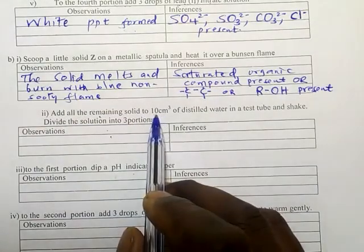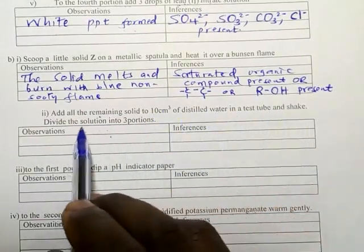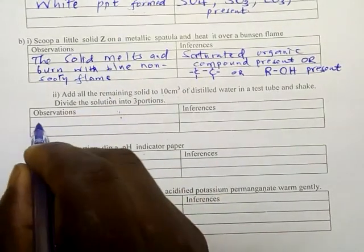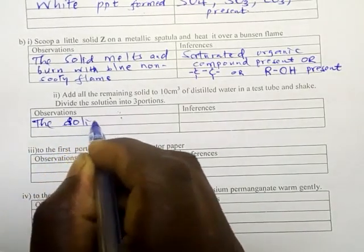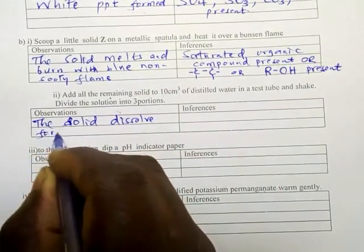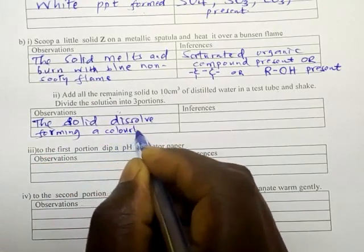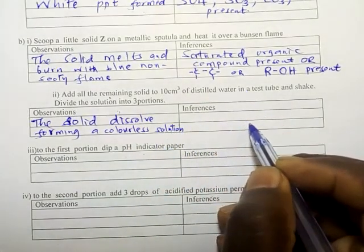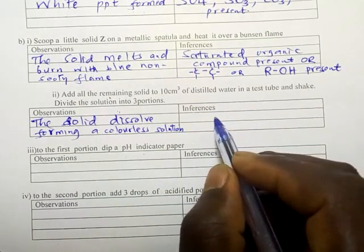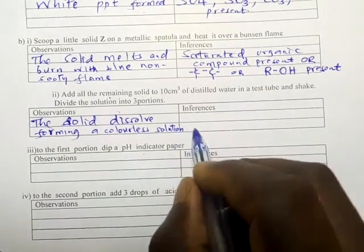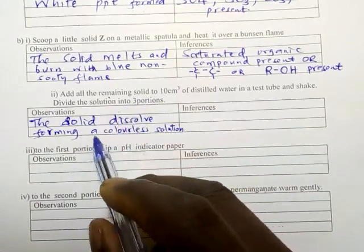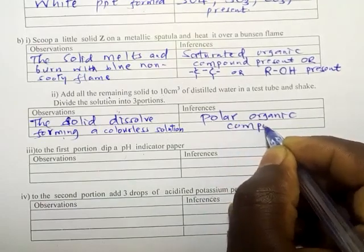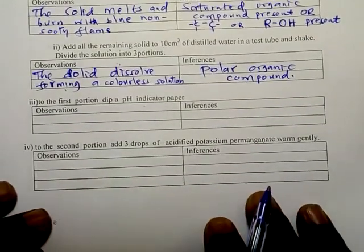Add the remaining solid to 10 centimeters cube of distilled water in a test tube and shake. Divide the solution into three portions. Now here we want to know, did solid Z dissolve? Did it dissolve in distilled water? Yes. So the solid dissolves, forming a colorless solution. Here we don't write soluble salt. We are in organic chemistry. But you can write soluble organic compound. But you want to know, was this solid polar or non-polar? It dissolves in water, it means it is polar. Polar organic compound present.